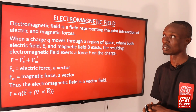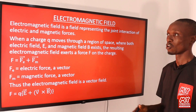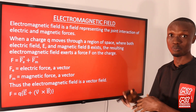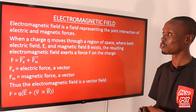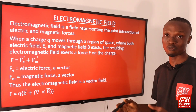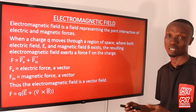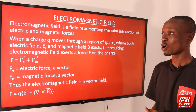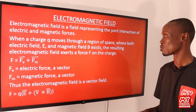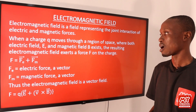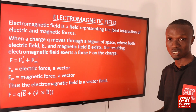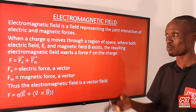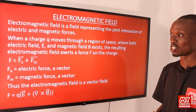In the first slide we are going to be introducing the concept of electromagnetic field — the meaning of electromagnetic field and all the formulas needed. Electromagnetic field is a field representing the joint interaction of electric and magnetic forces. When a charge q moves through a region of space where both electric field E and magnetic field B exist, the resulting electromagnetic field exerts a force F on the charge.